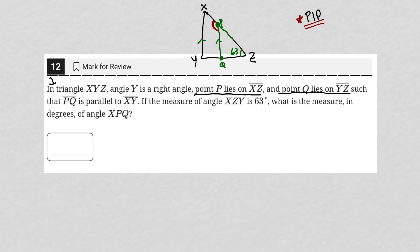The next step to this is to just start filling in things that we know. If PQ is parallel to XY, and we know that XYZ is a 90-degree angle, that makes PQZ also a 90-degree angle.